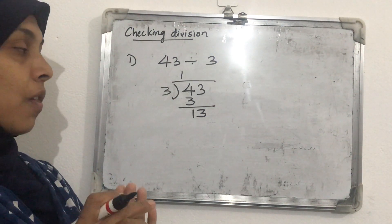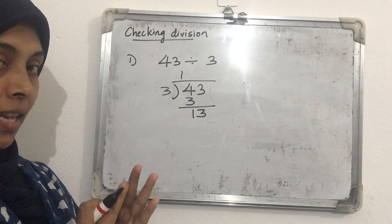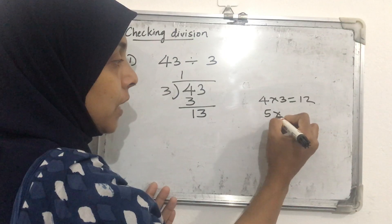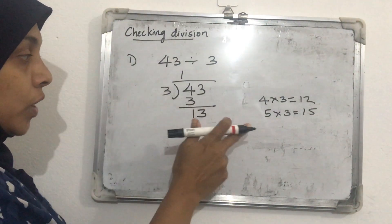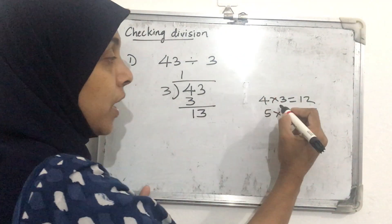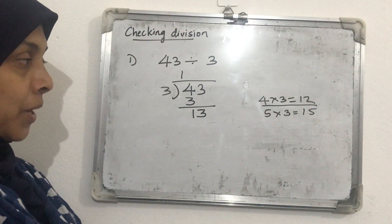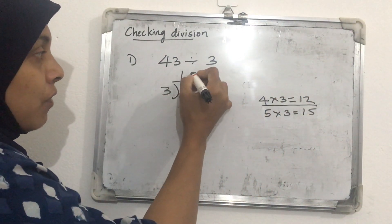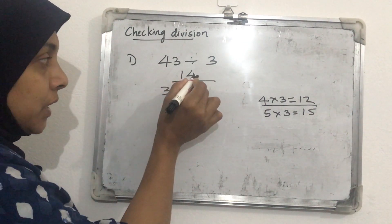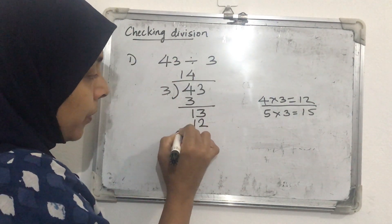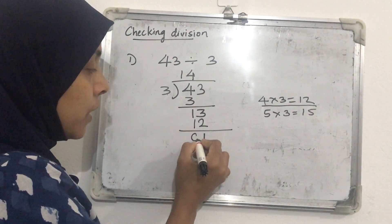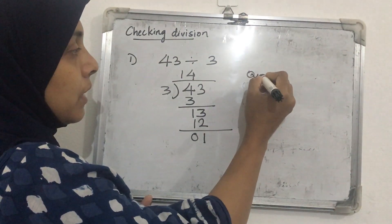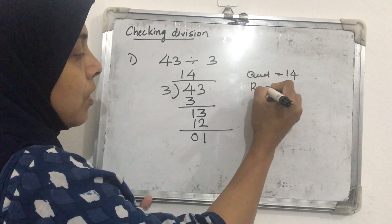Now 13 divided by 3 — how many 3s in 13? Using the table of 3: 1×3=3, 2×3=6, 3×3=9, 4×3=12, 5×3=15. Since 15 is greater than 13, we take 4. Write 4 in the quotient. 4 into 3 is 12; subtract: 13 minus 12 gives remainder 1. So the quotient is 14 and the remainder is 1.